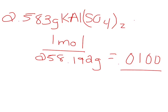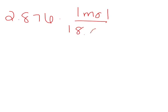And now we need to find the amount of moles of water. So we're going to take 2.876 and multiply it by 1 mole over the molar mass, which is 18.015. And that equals 0.1596 moles using sig figs.